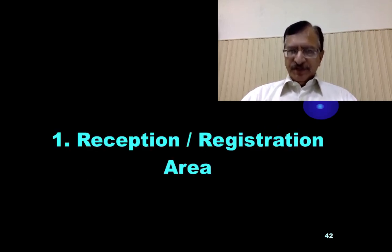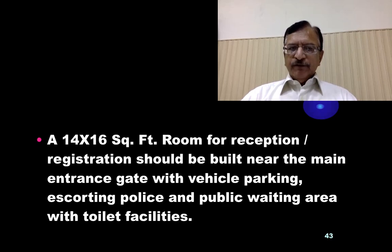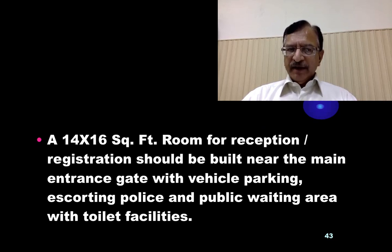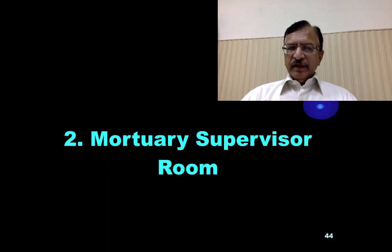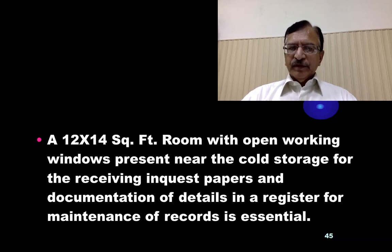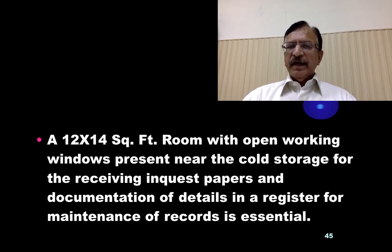About the reception and registration area: a 14 x 16 square feet room for reception and registration should be built near the main entrance gate, with a vehicle parking area for the escorting police and a public waiting area with toilet facilities. There should also be a mortuary supervisor room — a 12 x 14 square feet room with open working windows, present near the cold storage, for receiving inquest papers and documentation of details in a register for maintenance of records.